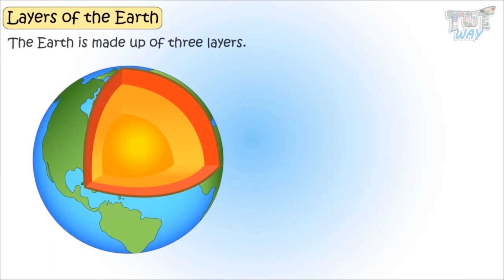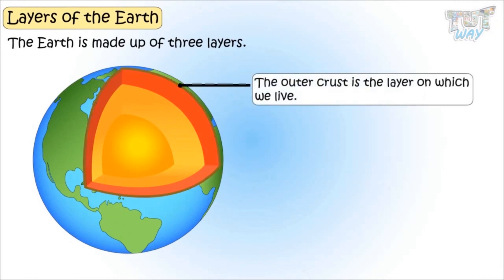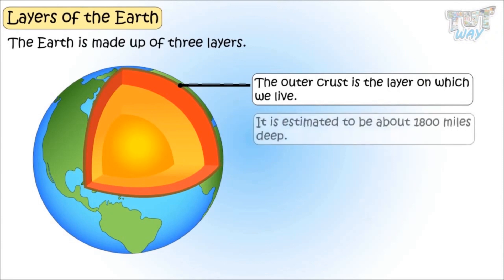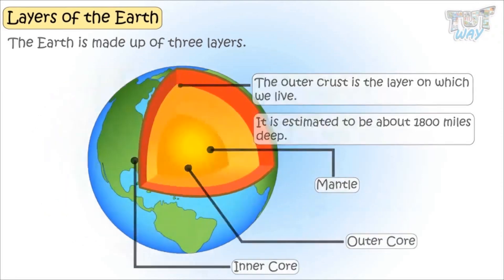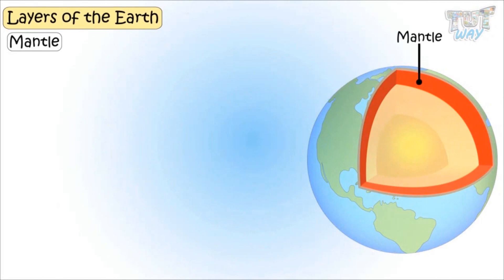The earth is made up of three layers. The outer crust is the layer on which we live. It is estimated to be about 1,800 miles deep. Then there is the mantle, and then the core, or the inner and outer core. The mantle is made up of molten material and gases.